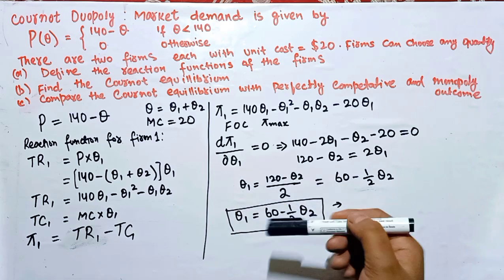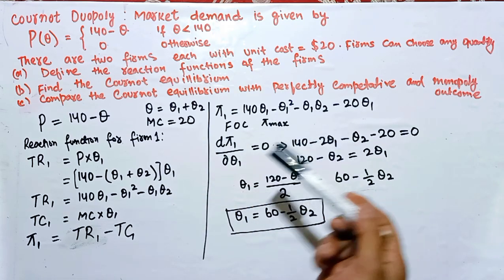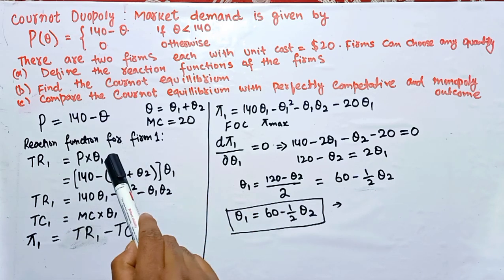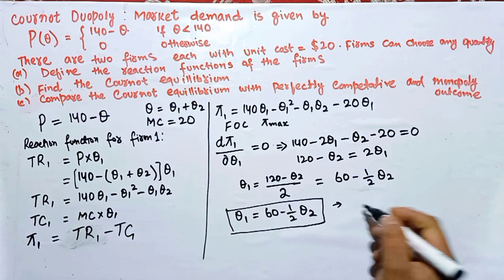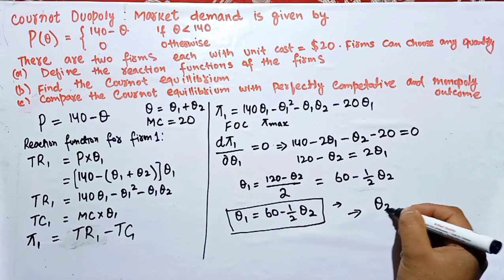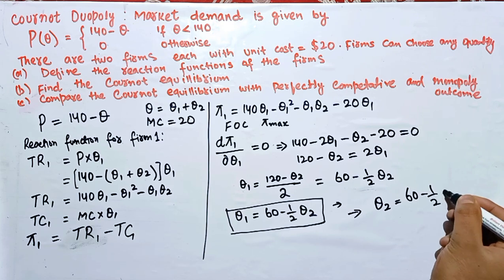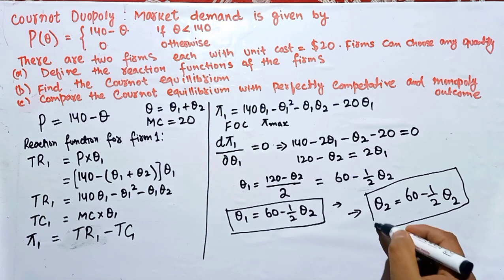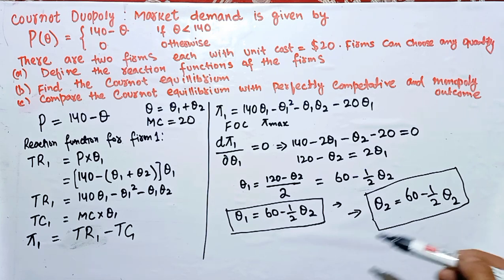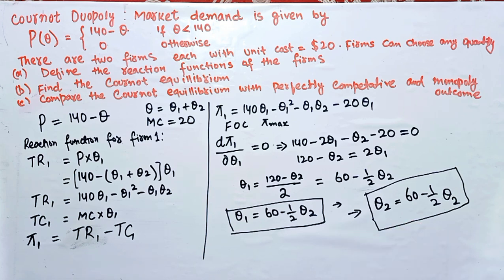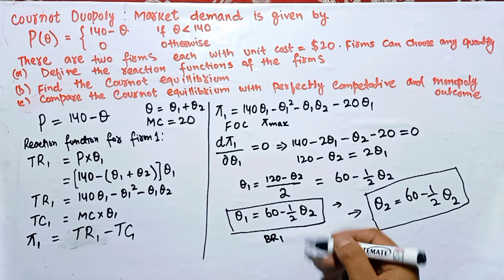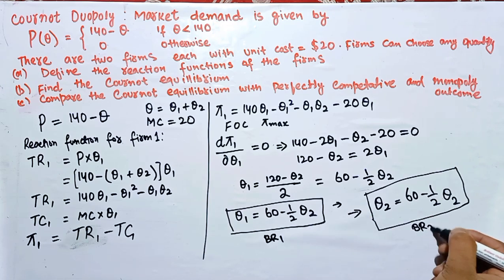Similarly, we can find the reaction function for Firm 2 using the same method. In terms of TR2 and Q2, applying the same steps gives Q2 = 60 minus (1/2)·Q1. This is the reaction function for Firm 2, also denoted BR2. So BR1 is the reaction function for Firm 1 and BR2 is the reaction function for Firm 2.